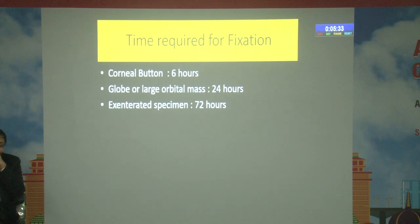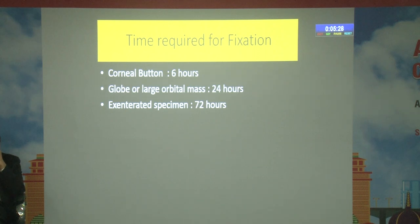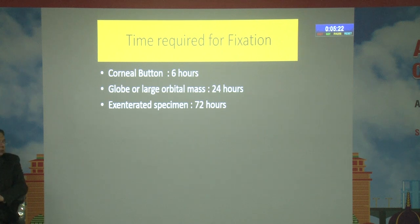How much time is required for fixation? A corneal button requires 6 hours; a globe or large orbital mass requires 24 hours; an exenterated specimen requires 72 hours. Don't ask for a report within 6 hours of an enucleated globe.